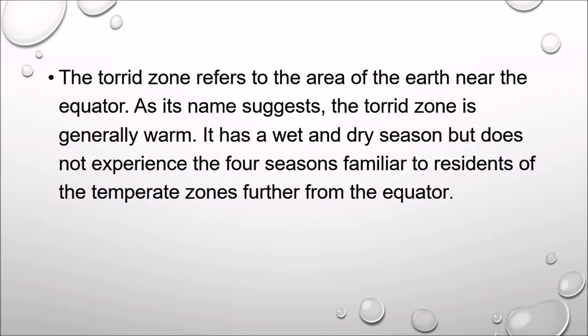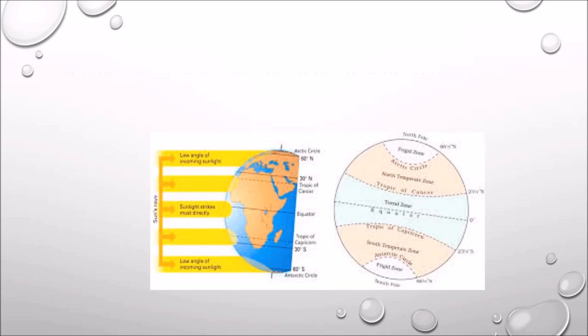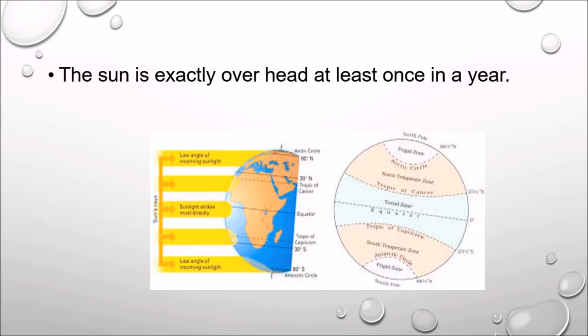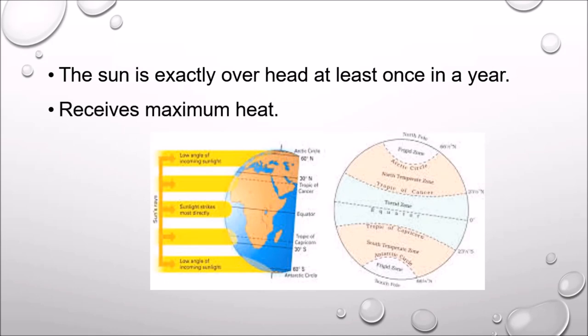The torrid zone is generally warm. It has a wet and dry season but does not experience the four seasons familiar to residents of the temperate zones further from the equator. In the torrid zone, the sun is exactly over the head at once in a year, and it receives maximum heat.